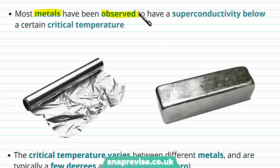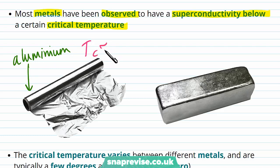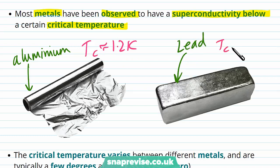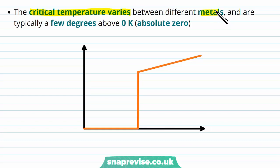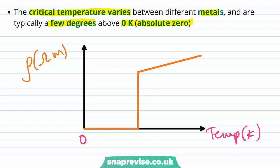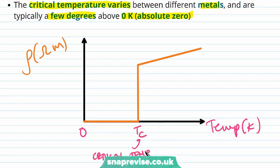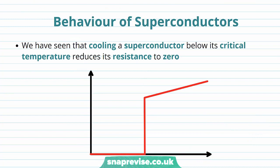Most metals have been observed to have superconductivity below a certain critical temperature. For example, aluminium has a critical temperature of around 1.2 Kelvin, and lead has a critical temperature of around 7.2 Kelvin. The critical temperature varies between different metals and is typically a few degrees above absolute zero, around 0 to 4 Kelvin for most metals.